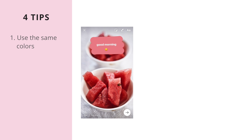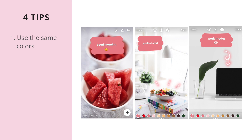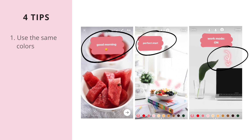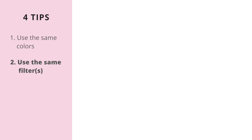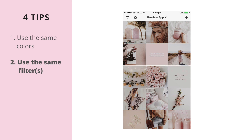The first tip is to always use the same color combination when you use the drawing tool or the text tool, whether you're doing it inside of Preview or inside of Instagram. The second tip is to always use the same filters, especially if you're very big on keeping an Instagram theme. If you have a favorite filter inside of Preview app, why not use the exact same filter when you are on your Instastories?